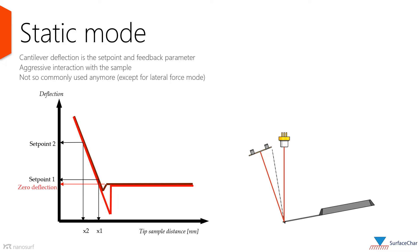In static mode, the cantilever deflection is used as the set point feedback parameter. Deflection, read by a laser reflecting from the cantilever onto a photodiode, is representative of the cantilever bending, which in turn is directly proportional to the force applied by the cantilever to the surface. The static mode results in a relatively aggressive interaction with the surface.